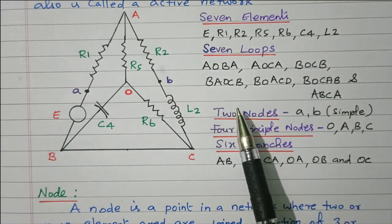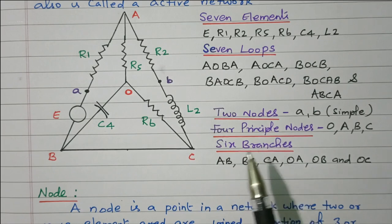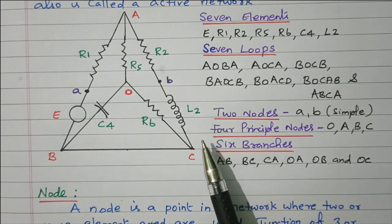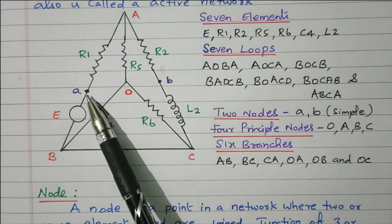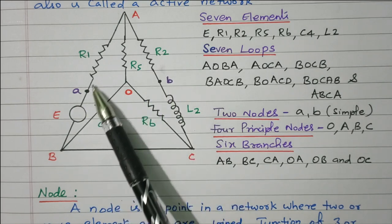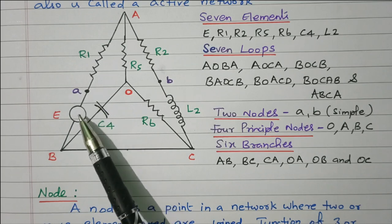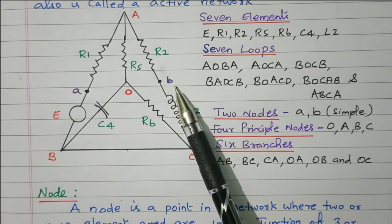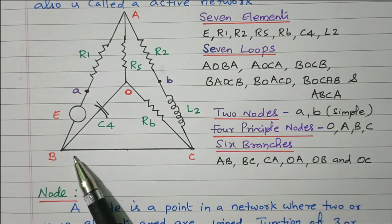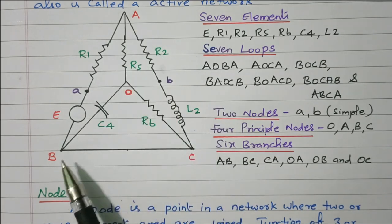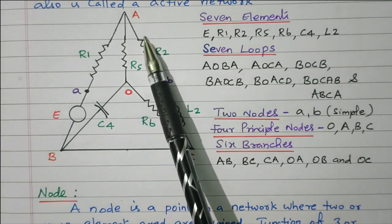Next we will see the node. What is meant by a node? A node is a point in a network where two or more elements are joined together — it is the junction of elements. There are two types: simple node and principal node. A and B are simple nodes — the junction where only two elements are connected. More than two elements connected means it is called a principal node: A, B, C, and O are the four principal nodes.